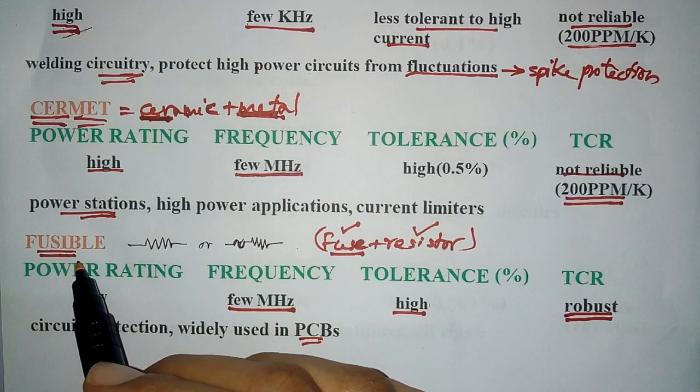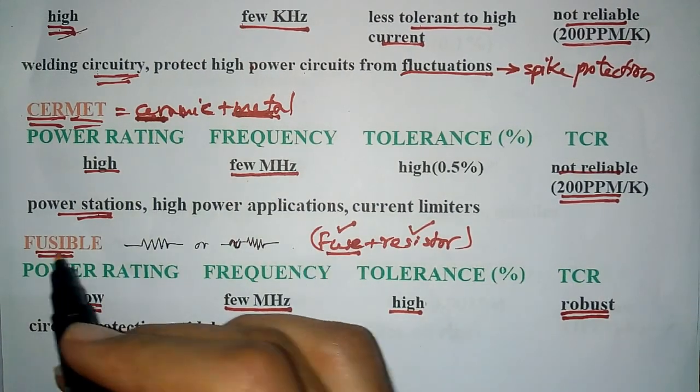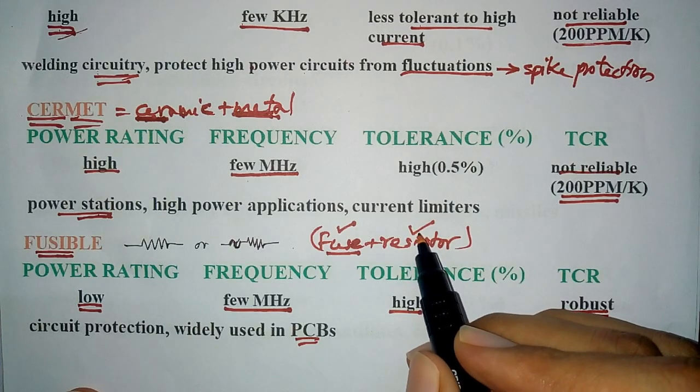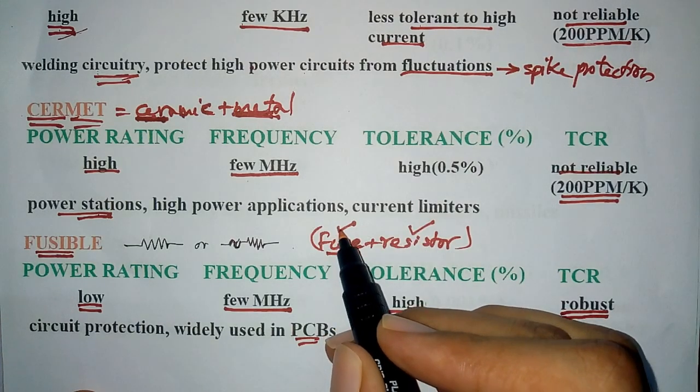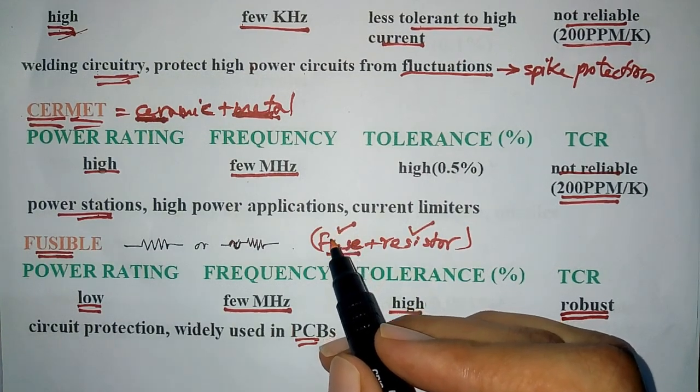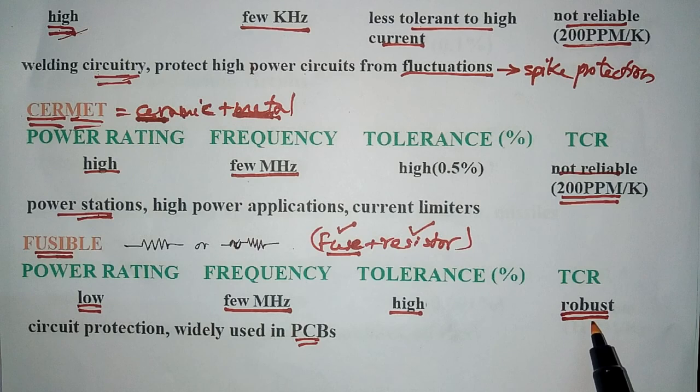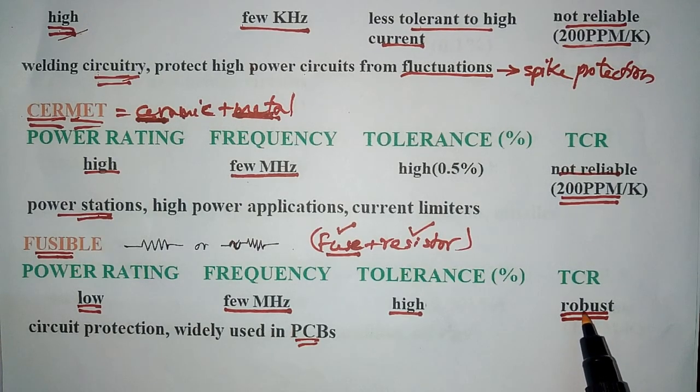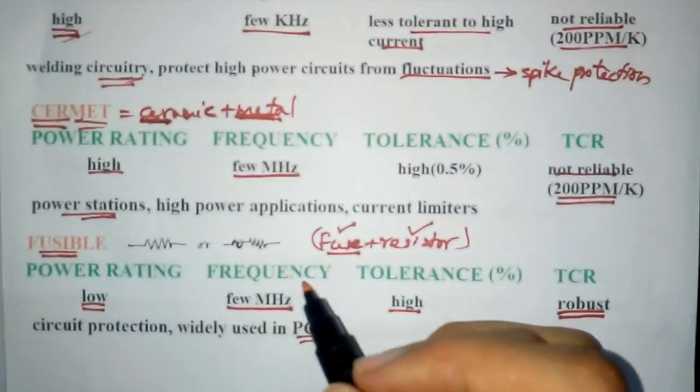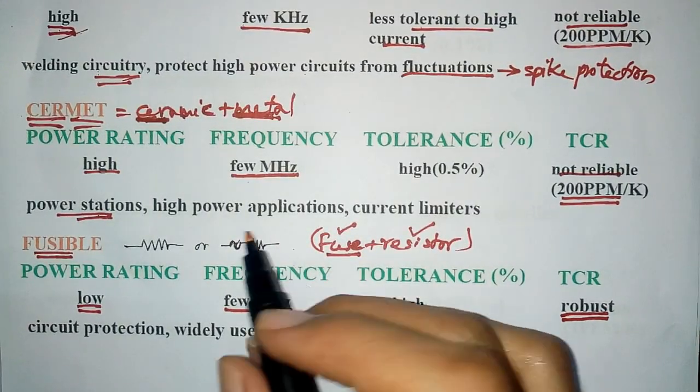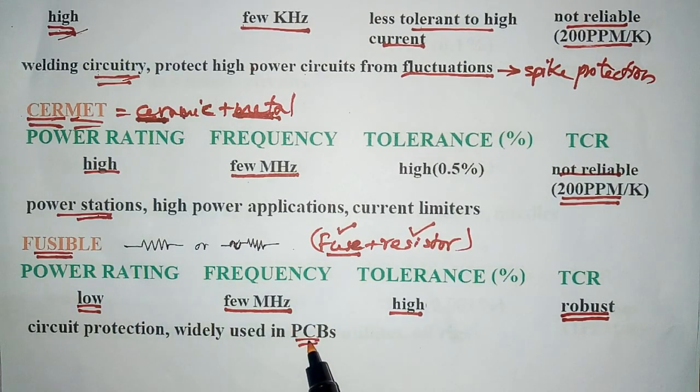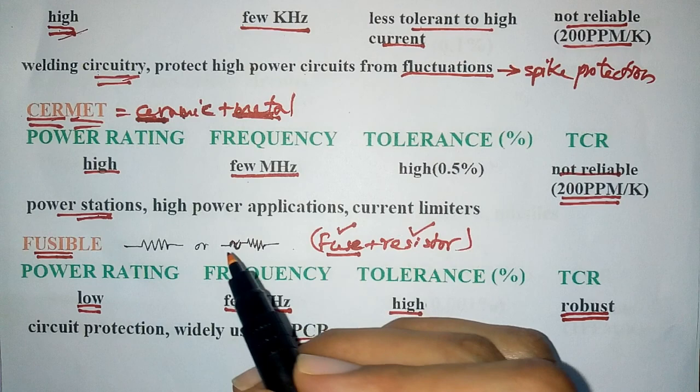Next is fusible resistor. As its name indicates, it is a combination of fuse and a resistor. In normal case it acts as a resistor and when there is overload or fluctuation it acts as a fuse. It's very robust with respect to temperature and TCR with high tolerance. The frequency is few MHz and its power rating is low because it is generally used for PCBs. As this is a fuse, it is used for circuit protection.